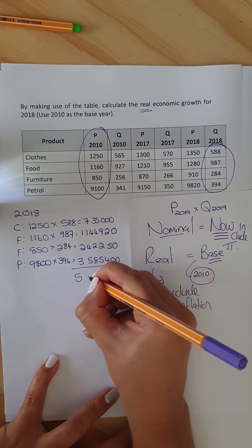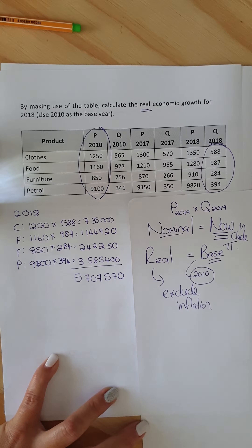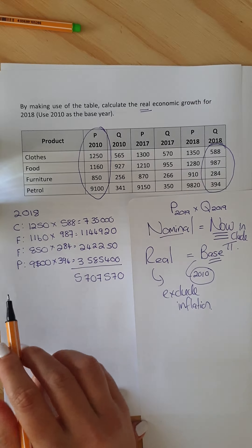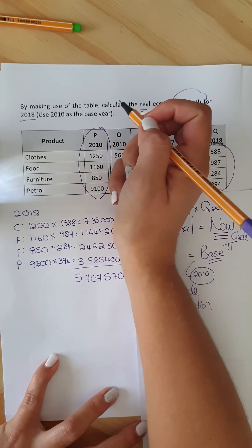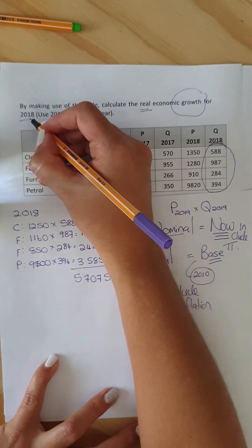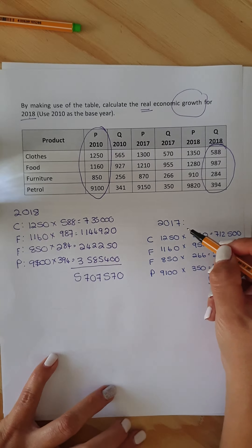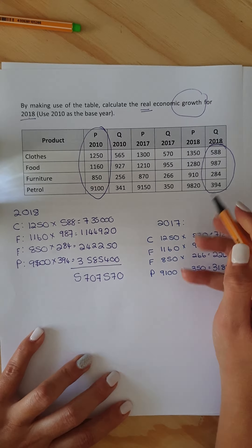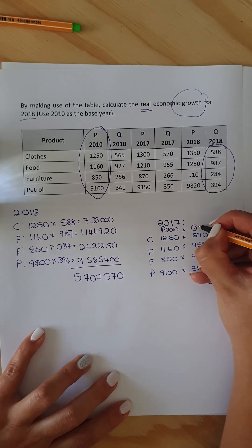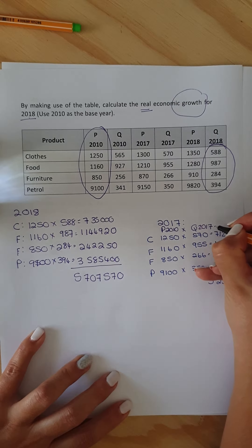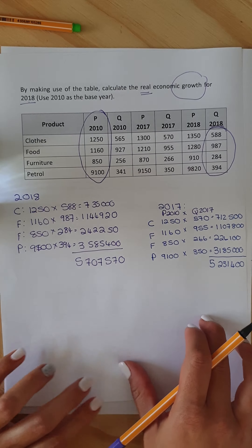For petrol we have over 3 million. Adding everything up gives us 5,707,570 for 2018. Now, since we need to establish whether the economy has grown, we have to use the previous year as well to compare. So we do exactly the same thing for 2017 — we take the base year prices from 2010 times the quantities for 2017.